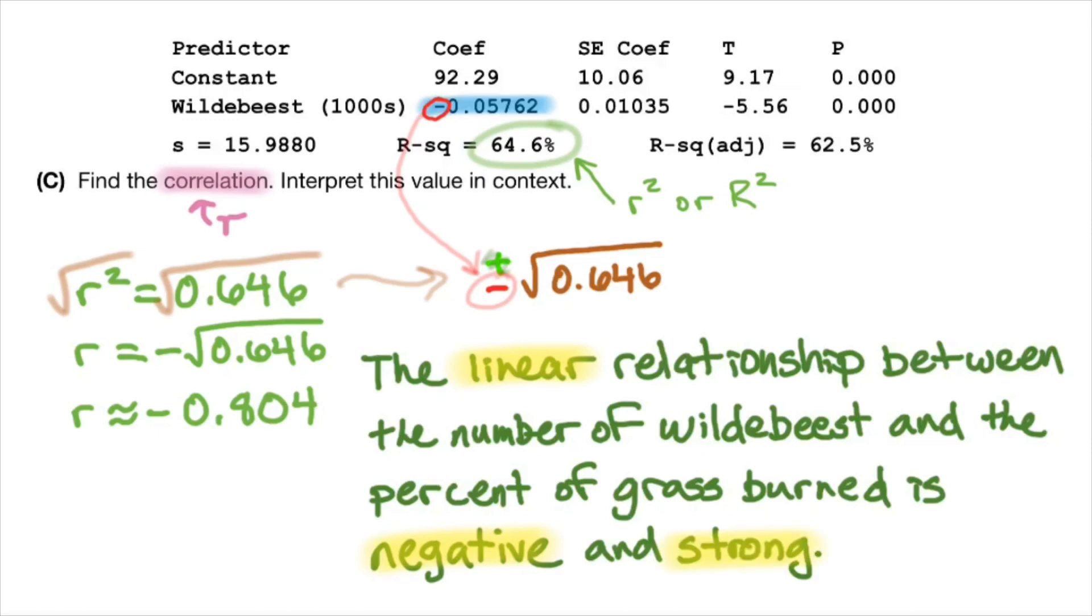And then it's a strong relationship. We know that it's strong for a few reasons. Negative 0.8 is within the boundary lines for saying that something is strong. And if you recall what the scatter plot looked like on the first slide, the linear relationship between number of wildebeest and percent of area burned was pretty tightly compacted. If you were to draw an oval around those dots, it would be pretty skinny. So we're confident to say that it's strong.